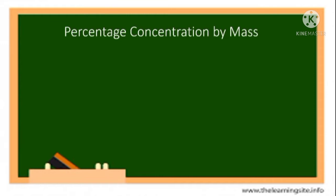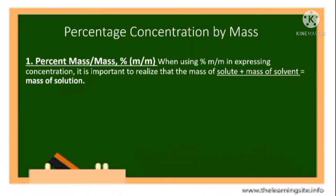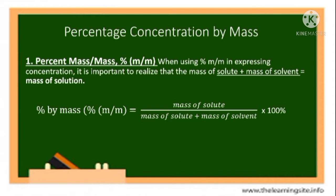Let's look at percentage concentration by mass. When using percentage concentration by mass in expressing concentration, it is important to realize that the mass of solute plus mass of solvent equals the mass of solution. This equation shows that the fraction can be converted to a percent by dividing the mass of solute by the mass of solution, multiplying by 100, and adding a percent sign.